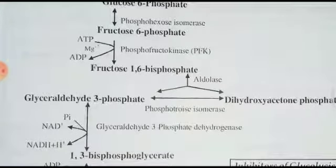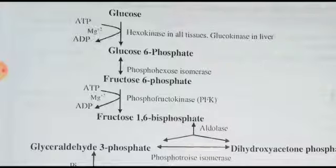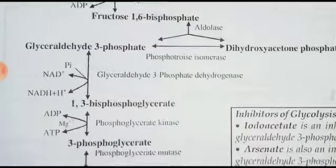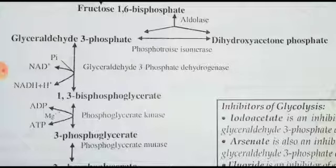Up to fructose-1,6-bisphosphate is called the preparatory phase or utilization phase, since ATP is used in steps 1 and 3. Step 4: fructose-1,6-bisphosphate, having six carbons and two phosphates, is divided into two equal three-carbon parts — glyceraldehyde-3-phosphate on one side and dihydroxyacetone phosphate (DHAP) on the other — with the help of enzyme aldolase. These two products are interconvertible isomers, converted to each other by phosphotriose isomerase.